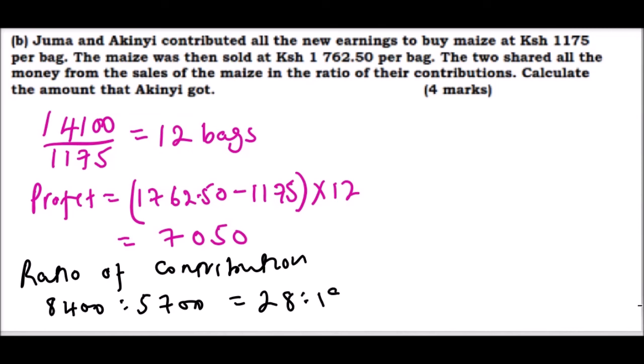When you simplify that you'll be able to get this is 28 to 19. It means Akinyi got 19 out of, if you add 28 plus 19, that will give you 47.